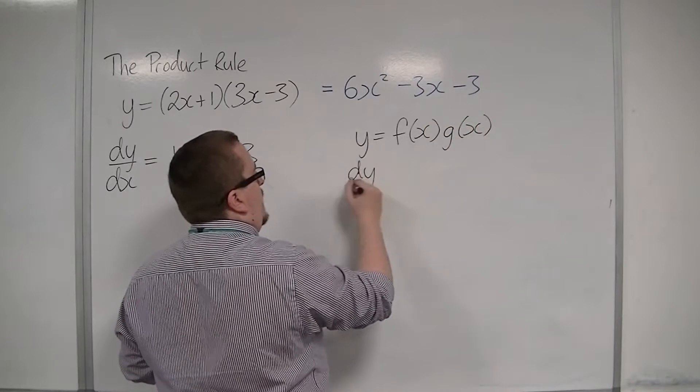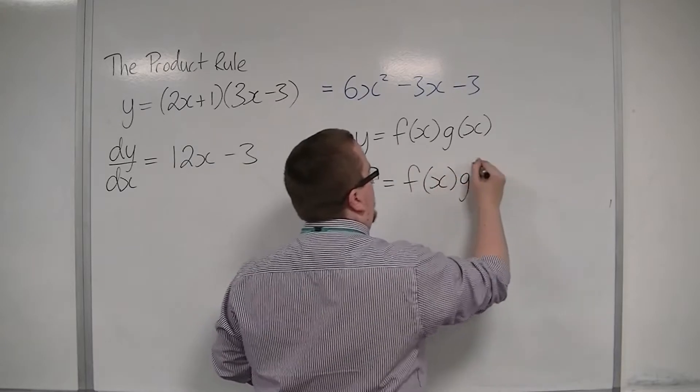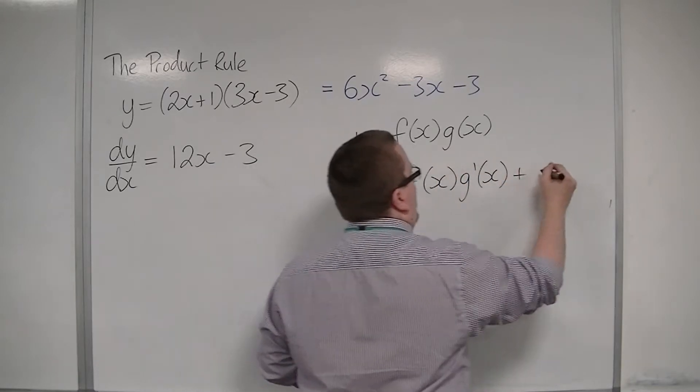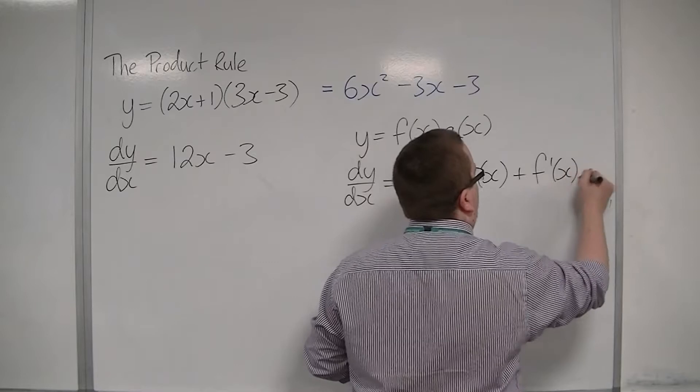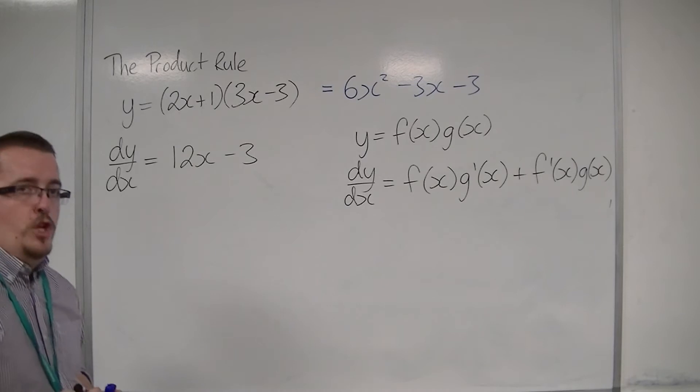then dy by dx is the first times the derivative of the second, plus the second times the derivative of the first. So f times g prime plus f prime times g.